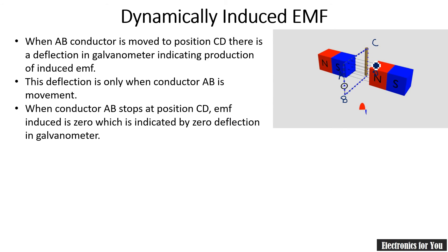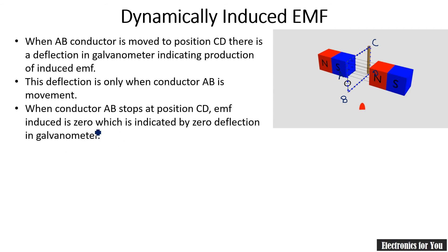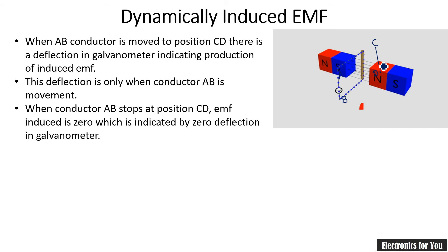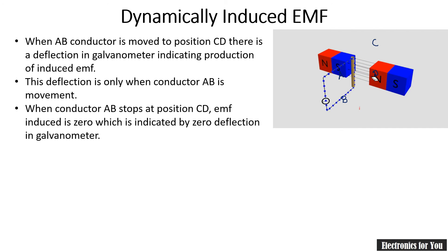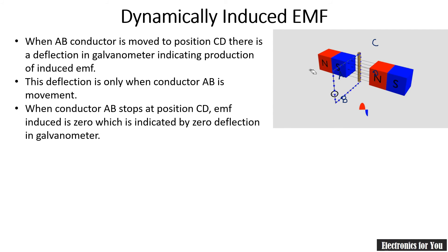When the conductor stops at position CD, the EMF becomes zero, which indicates zero deflection in the galvanometer. Once the conductor is at position CD with no further movement, the EMF induced is zero, because EMF is generated only when there is movement — that is, a change in magnetic flux.